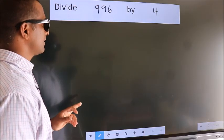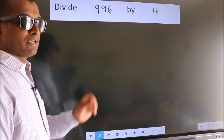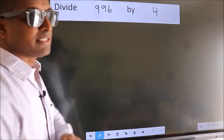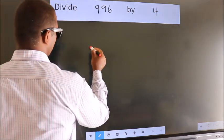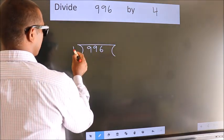Divide 996 by 4. To do this division, we should frame it in this way. 996 here, 4 here.